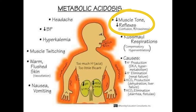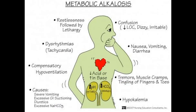Moving on to metabolic alkalosis — it's the opposite, with too much bicarbonate and too little acid. The causes include severe vomiting which is acid elimination, excessive gastrointestinal suctioning, diuretics, and excessive sodium hydrogen carbonate intake.